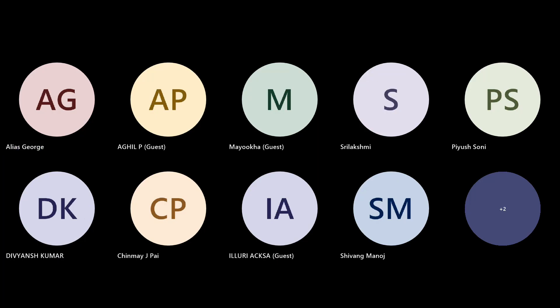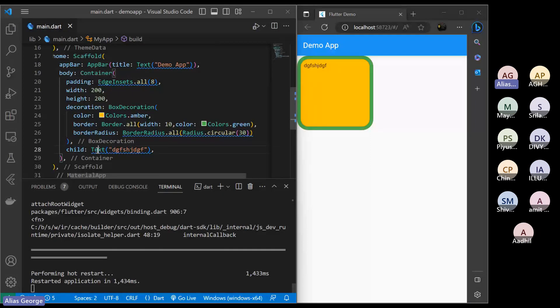That's all about the container widget. I'll share the code — meanwhile try to understand from your end. You can also search online about the container widget if any doubt is there. Container is a box: you can give color, give a border, pass a child widget to put things inside, and give spacing using padding.